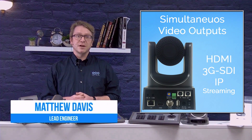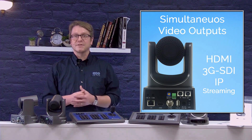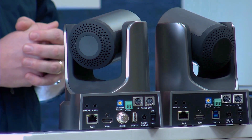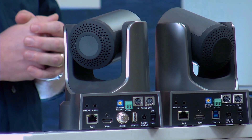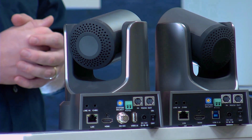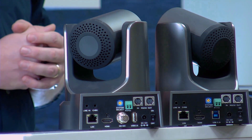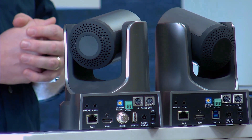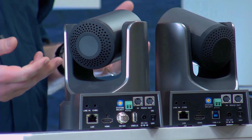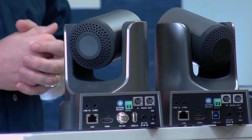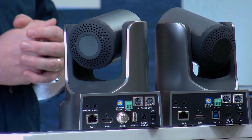The resolution of these video outputs is set by the rotary dial on the back of the camera. You'll notice each PTZOptics camera also has an analog CVBS port. The port is not simultaneous with the others. If you wish to send composite video from the camera, you must use the CVBS port with the rotary dial set to a resolution of 480i or 576i.